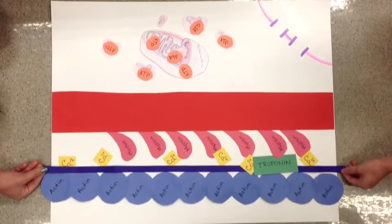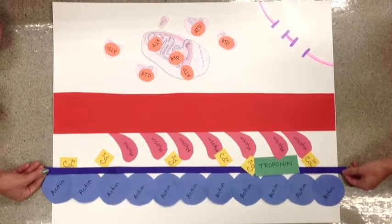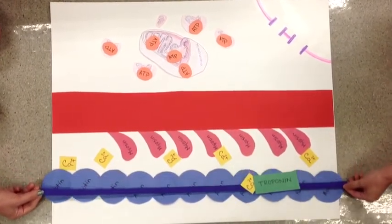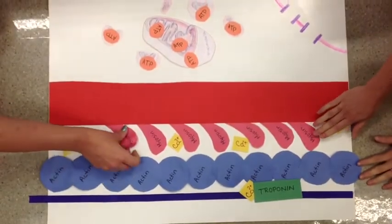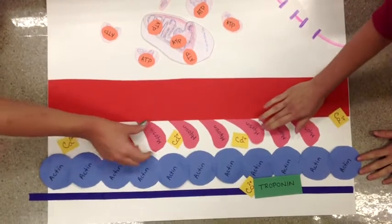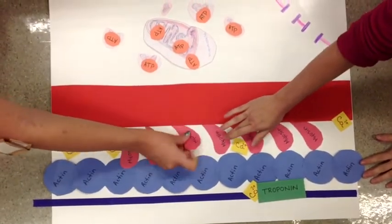Calcium floods over the thin filaments and binds to troponin, pulling tropomyosin off the active site on the actin. Myosin heads then bind to the exposed active sites on the thin filaments forming cross bridges.